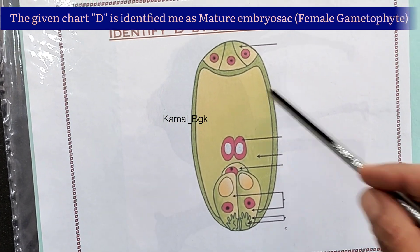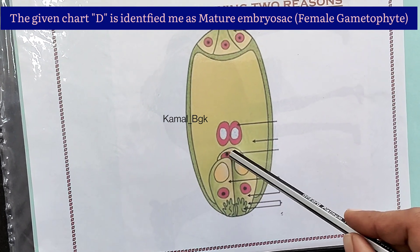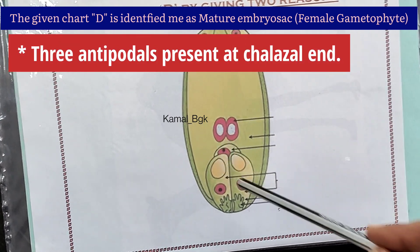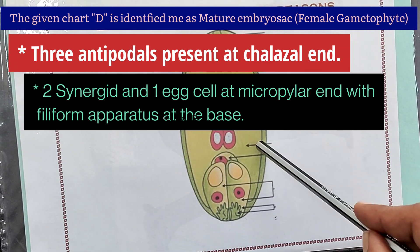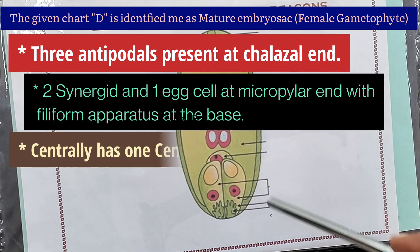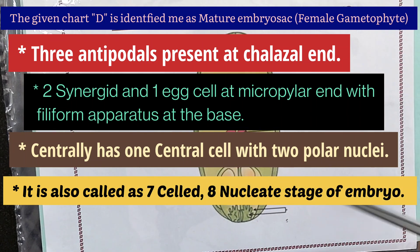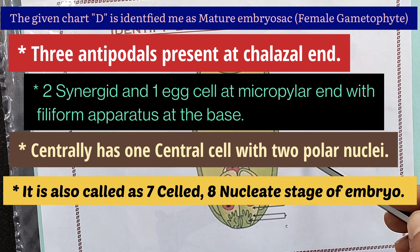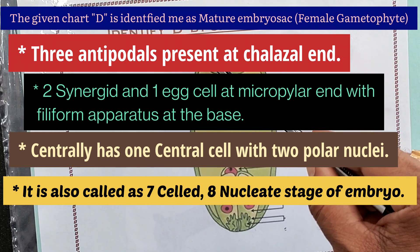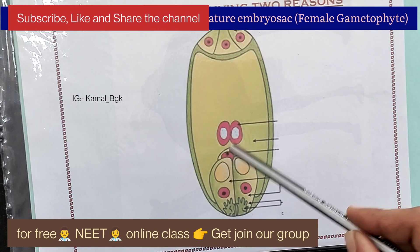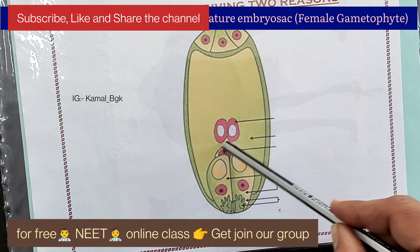The given chart D is identified as mature embryo sac or female gametophyte. Three antipodals are present at the chalazal end. Two synergids and one egg cell are at the micropylar end with filiform apparatus at the base. The central cell has two polar nuclei. Hence, it is also called the 7-celled, 8-nucleate stage of embryo, because it has 7 cells with 8 nuclei. The two nuclei combine to form one central cell called the polar cell, and the nuclei are called polar nuclei.